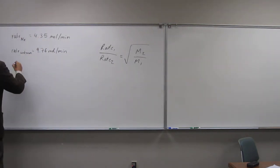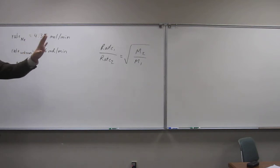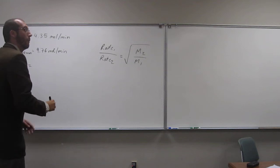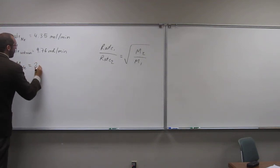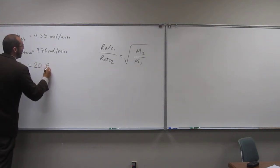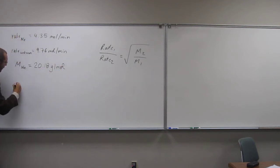So we're looking, well, we've got molar mass of neon, right? That's really given to us on the periodic table. So let's look up on the periodic table. We'll say 20.18 grams per mole. And we're looking for the molar mass of the unknown gas. Okay?